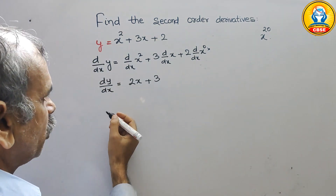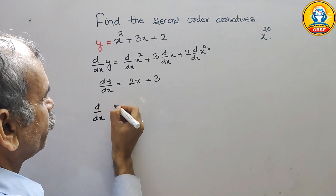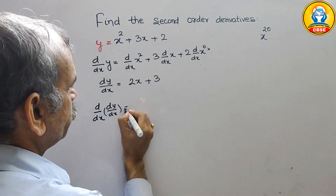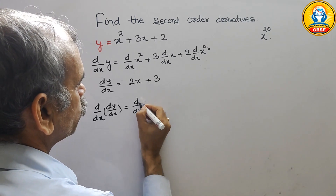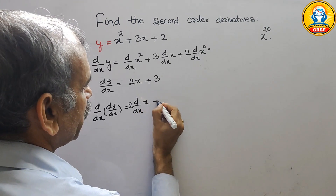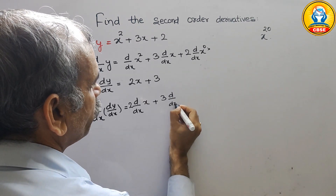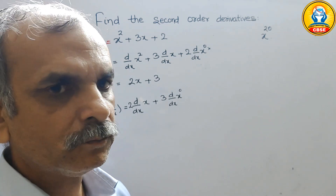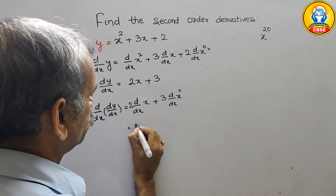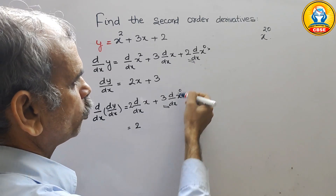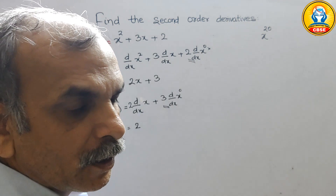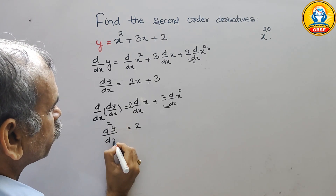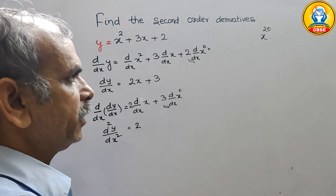Next, we find the second derivative: d by dx of dy by dx. We differentiate 2x plus 3. The derivative of 2x is 2, and the derivative of 3, written as 3 times x to the power of 0, becomes 0. So the answer for d squared y by dx squared is 2.